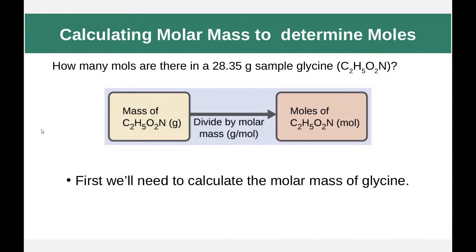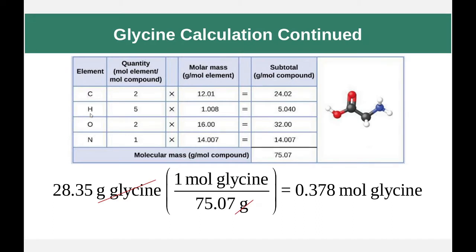How many moles are in a 28.35-gram sample of glycine? Now we have a compound, not just an element, so we first need to calculate the formula mass of glycine. Glycine has two carbons, five hydrogens, two oxygens, and one nitrogen. We multiply each by its molar mass from the periodic table and add them together. One mole of glycine weighs 75.07 grams. We take our 28.35 grams and divide by 75.07 grams per mole — putting moles in the numerator — to get 0.37 moles of glycine.